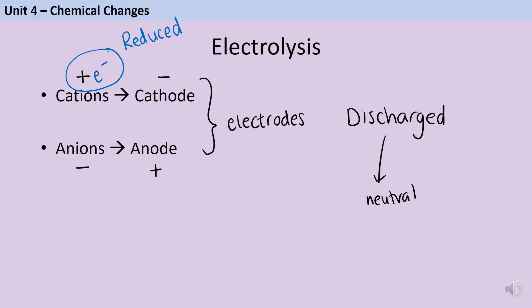The anions, meanwhile, will transfer their extra electrons to the anode, which means that they lose electrons, and so we say that they are oxidized.